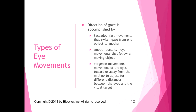The direction of gaze is accomplished by three different systems. Saccades are fast movements that switch gaze from one object to another. Smooth pursuits are eye movements that follow a moving object — for example, standing at the side of the road watching cars go by, your eyes follow each car. As that car leaves your visual field, you do a fast saccade to switch to the next car.